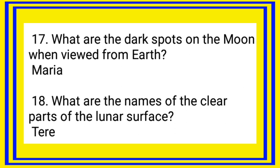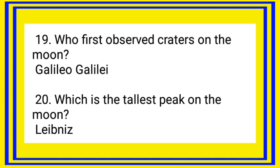Question: What are the dark spots on the moon when viewed from Earth? Answer: Maria. Question: What are the names of the clear parts of the lunar surface? Answer: Perae. Question: Who first observed craters on the moon? Answer: Galileo. Question: Which is the tallest peak on the moon? Answer: Lebanese.